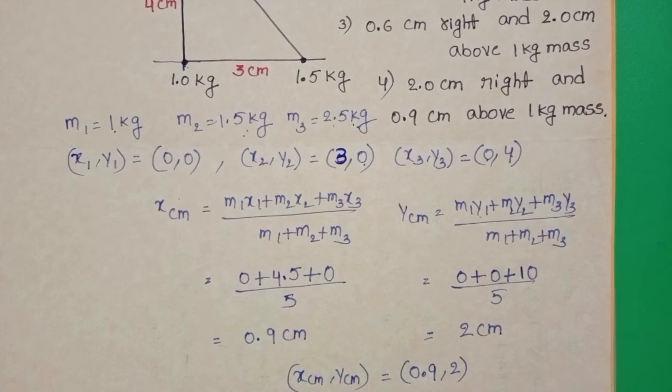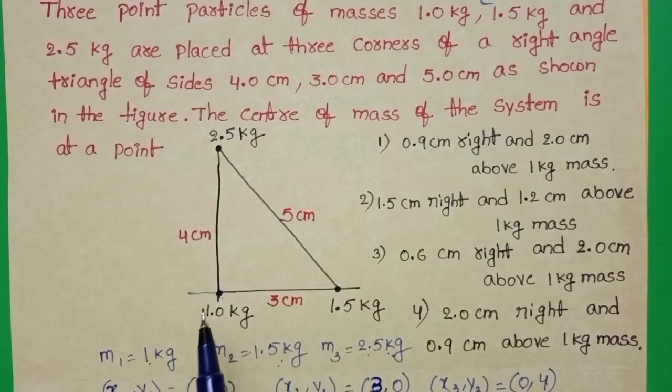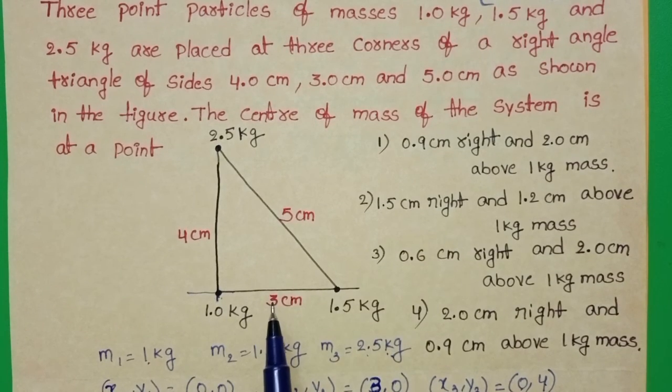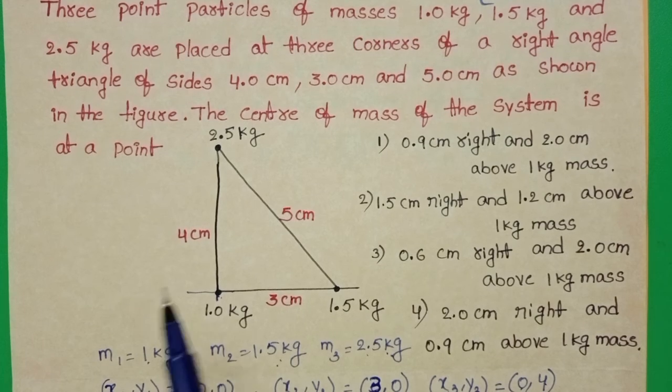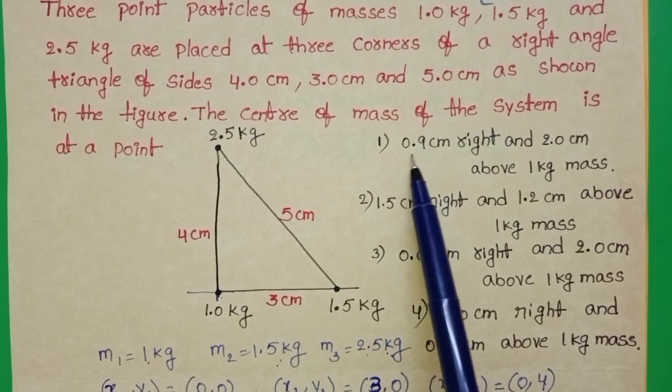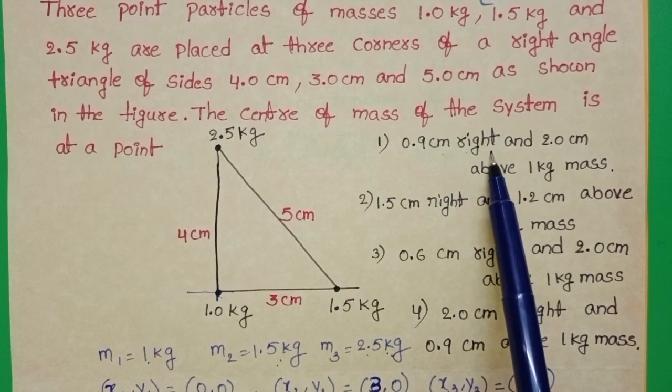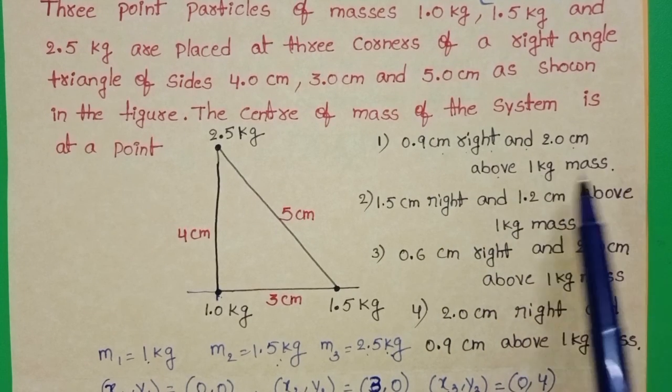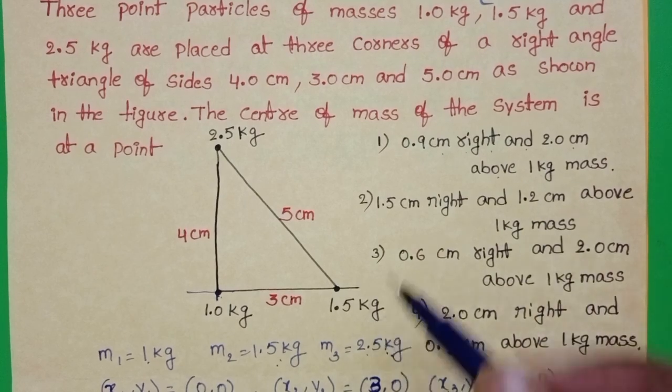2 cm. From the x-axis it is located at 0.9 cm and from y-axis it is located at 2 cm. 0.9 cm right and 2 cm above 1 kg mass. First option is correct.